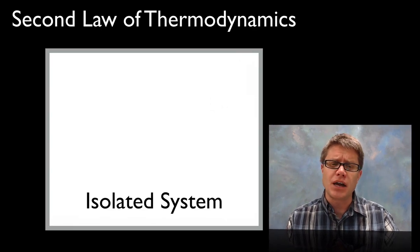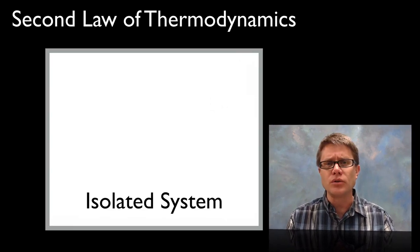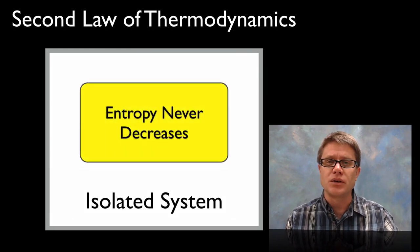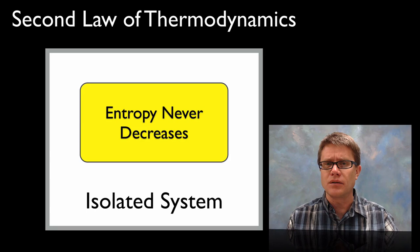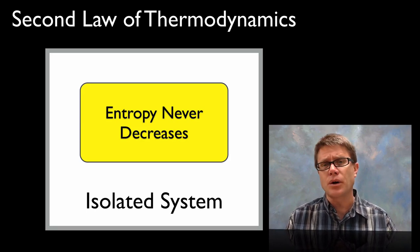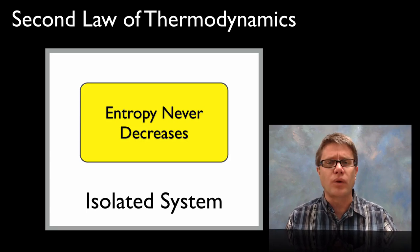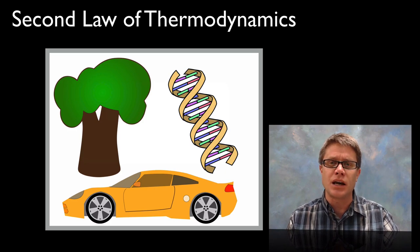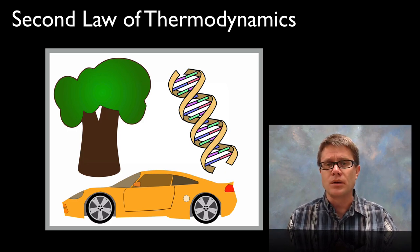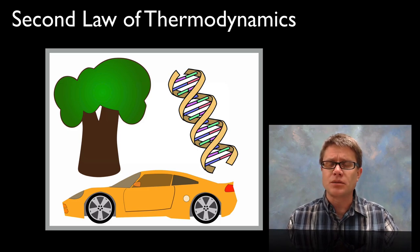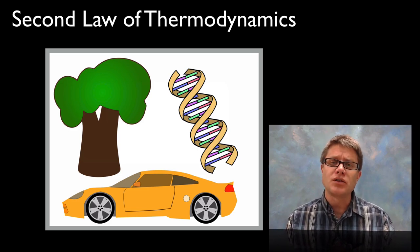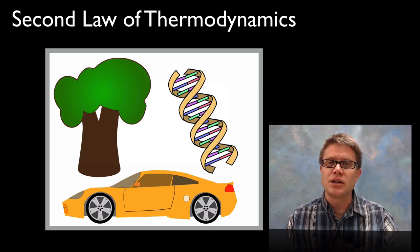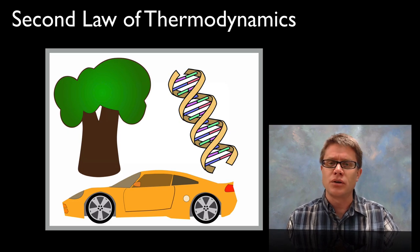And so the second law of thermodynamics says that in an isolated system, or a closed system isolated from the universe, entropy never decreases. In other words our delta S is always going to be positive. In other words matter and energy are going to become dispersed over time. In other words randomness increases over time. Now you might think to yourself, I know that that's not true. Because I see stuff out there that's not random. In other words I see trees and cars and DNA. And I know these things have a high amount of order. Well you're not violating the second law of thermodynamics because remember we're talking about an isolated system. And so we can decrease entropy in an isolated system. But as we do that we're increasing entropy of the surroundings or the universe around it.